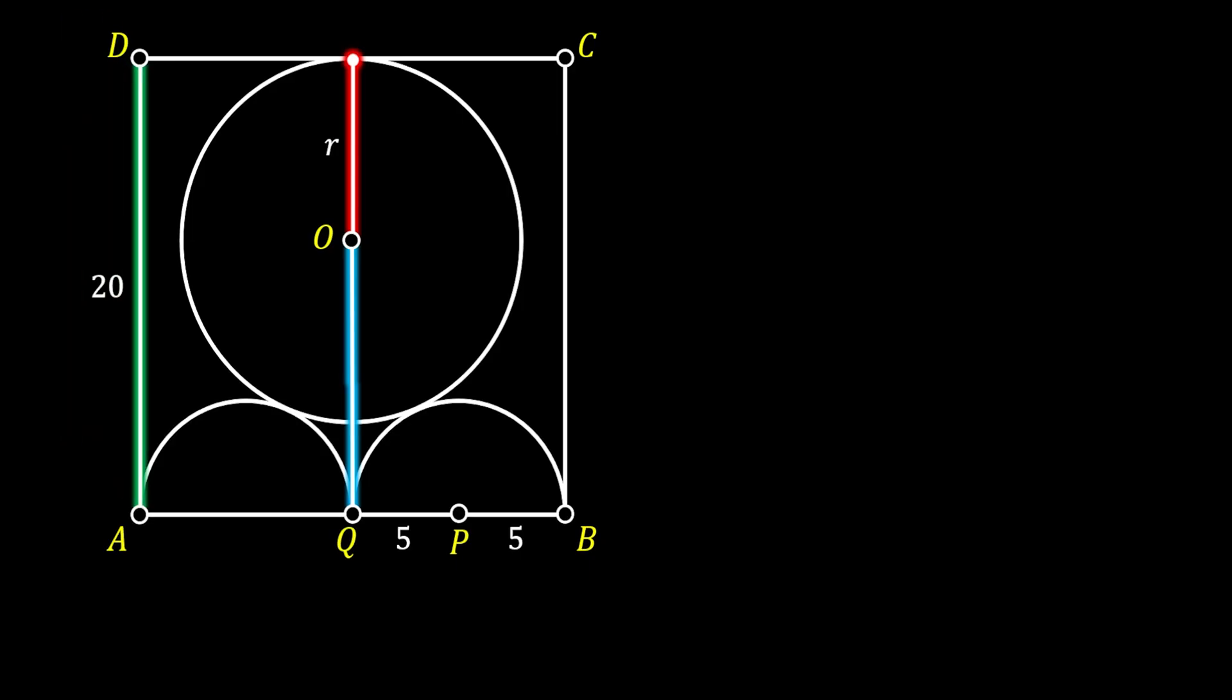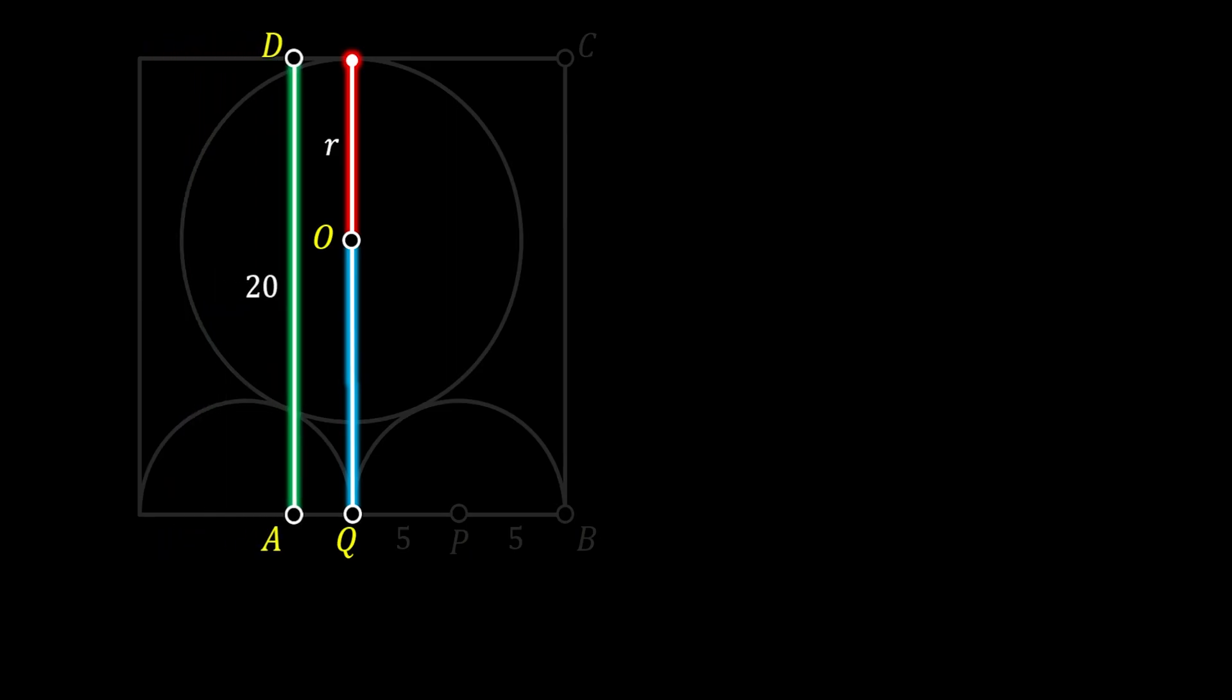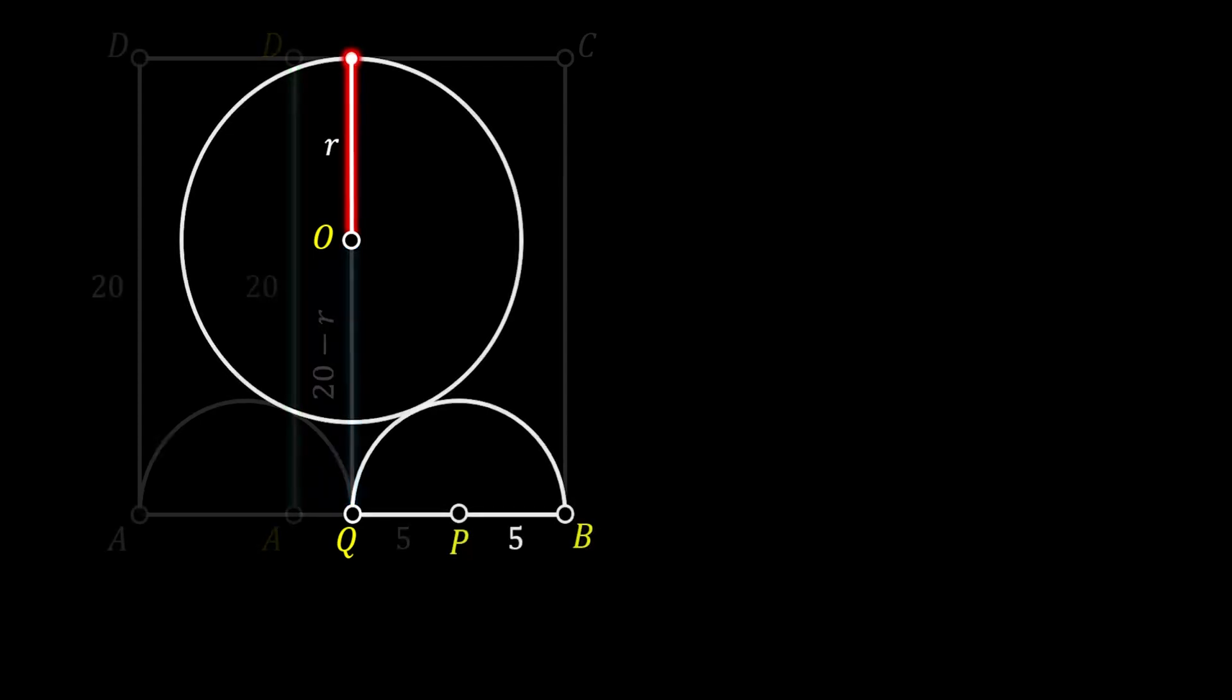If we simplify our image a little bit and slide this side to the right, you can see that this side has the length which equals the sum of the lengths of blue and red line. This means that the length of the blue line must be equal to 20 minus r.